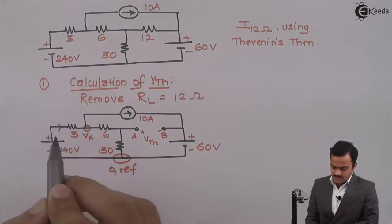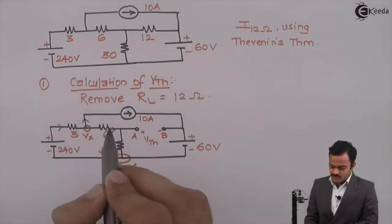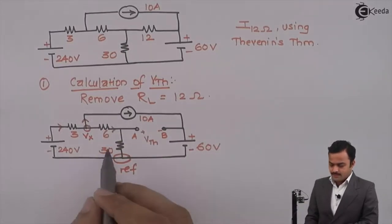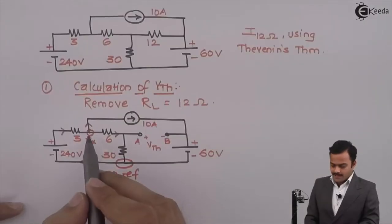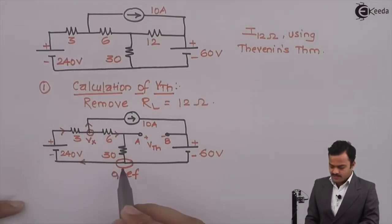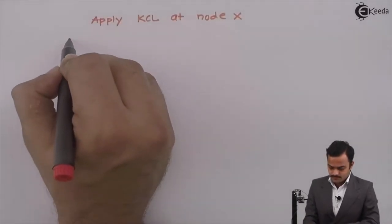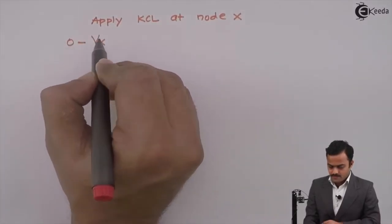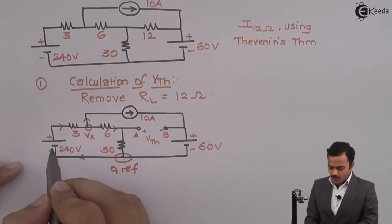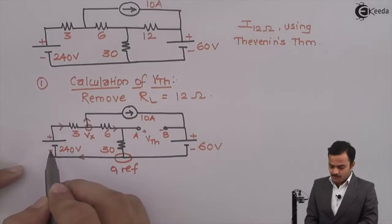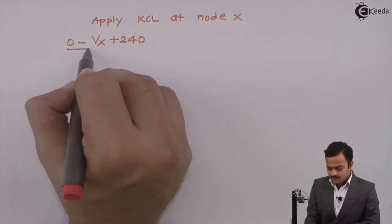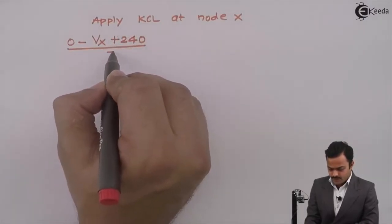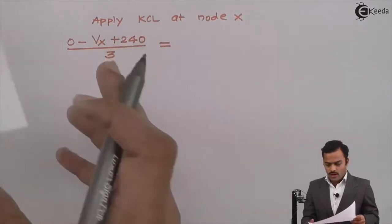I will mark branch currents randomly, except a current source which is given as a fixed direction. Let us apply KCL at X node. At X, I am having one incoming current branch. Equation for that is 0 minus Vx. With the direction that I have assumed, I come across a potential which is changing the polarity from minus to plus in the direction of current. It is a voltage rise plus 240 divided by 3 ohm, a branch resistance equal to outgoing current.